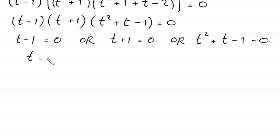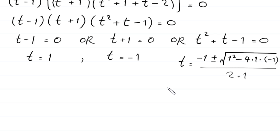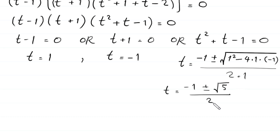From t-1 = 0, we get t = 1. From t+1 = 0, we get t = -1. From the quadratic t² + t - 1 = 0, using the quadratic formula, t = (-1 ± √(1² - 4·1·(-1))) / (2·1) = (-1 ± √(1+4)) / 2 = (-1 ± √5) / 2.